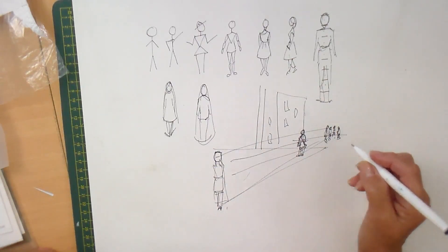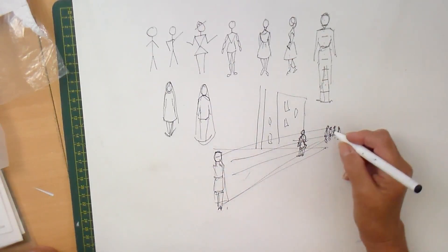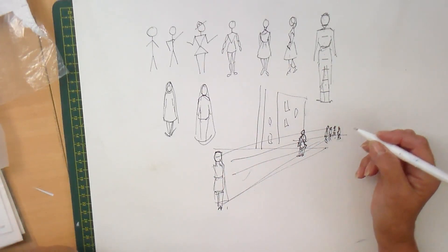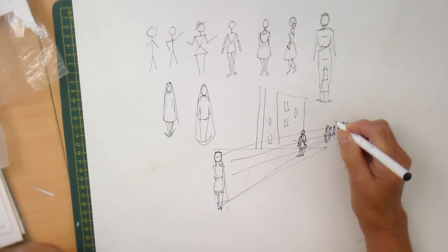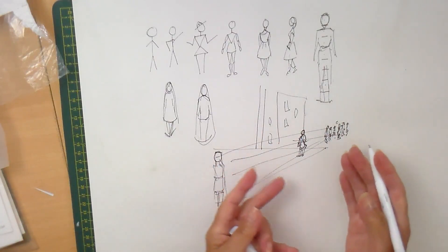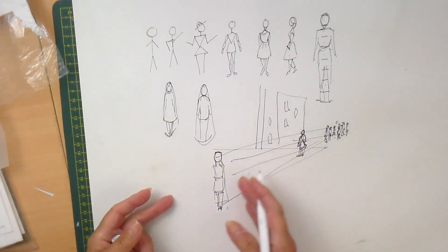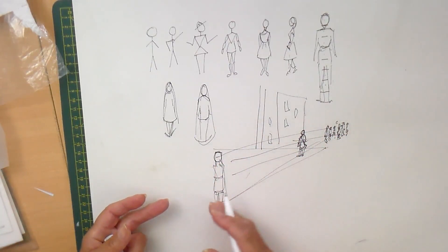But I think to help you with crowds, remember the further people, well, the further anything goes away from you, the less detail you can see. So people are just going to be a series of shapes in the end, and lots of heads. You know, if it's a crowd scene, just lots of heads. You can see, you get the shape, you get the idea. But as it comes nearer, then you want to have more detail.